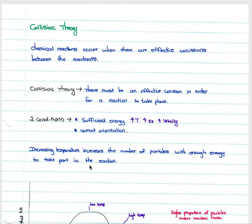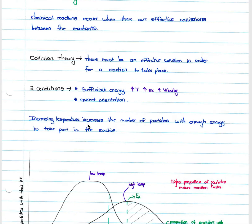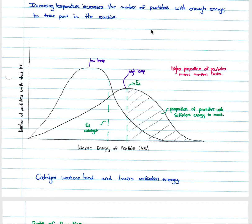Collision theory addresses how chemical reactions occur through effective collisions between reactants. For an effective collision to take place, two conditions are needed: sufficient energy — achieved by raising temperature, which increases kinetic energy and particle velocity — and correct orientation, meaning atoms or molecules must be correctly oriented for a successful collision. Increasing temperature increases the number of particles with enough energy to react, as shown on the low-temperature versus high-temperature graph.